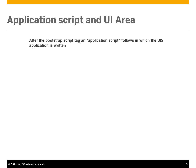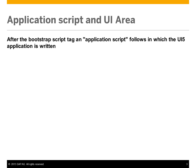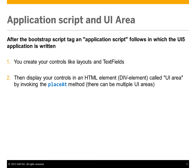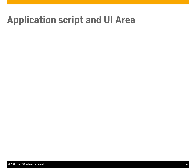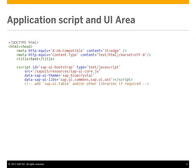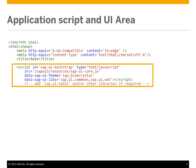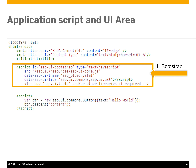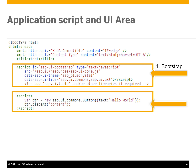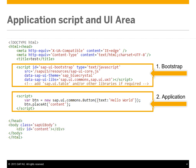After implementing the Bootstrap code, we write our application script. This is where we use controls like layouts and text fields and use the placeAt method to assign those to a div element in our HTML. This example shows the HTML page with Bootstrap code defining the theme and libraries, using the button control and the placeAt method to assign it to the div with the ID of 'content' — our UI area in the application.